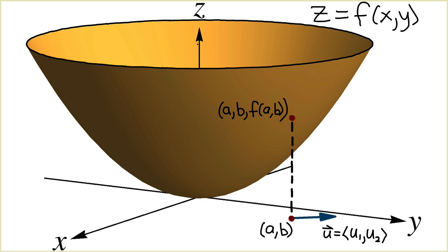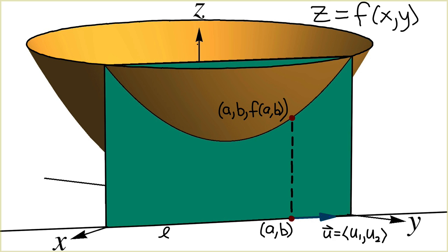To explain the meaning of the directional derivative of f at (a,b) in the direction of u, let's first draw a line L passing through the point (a,b) parallel to the vector u. Then we place a vertical plane in this figure passing through the line L.